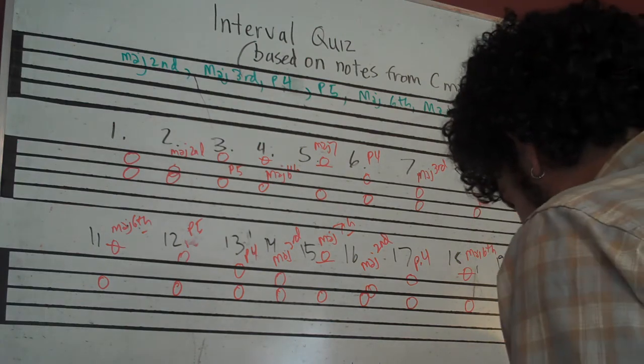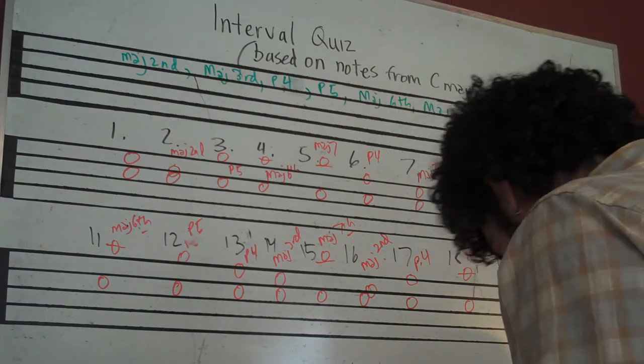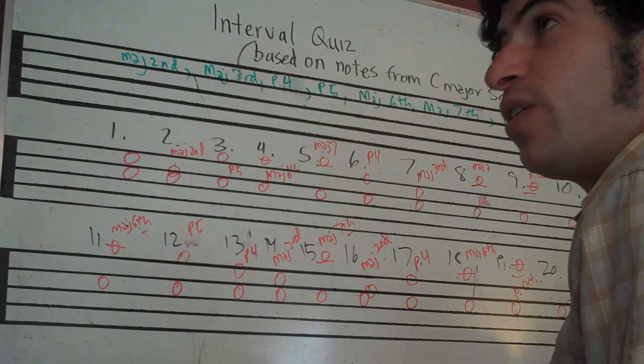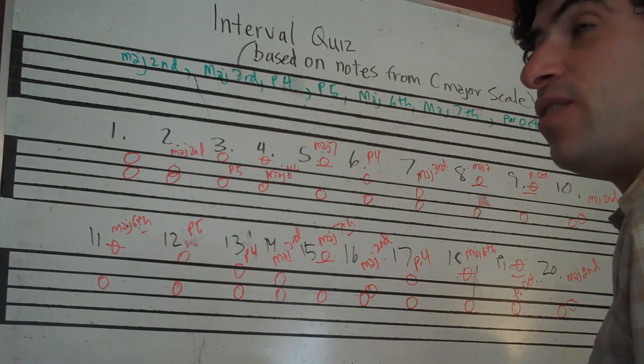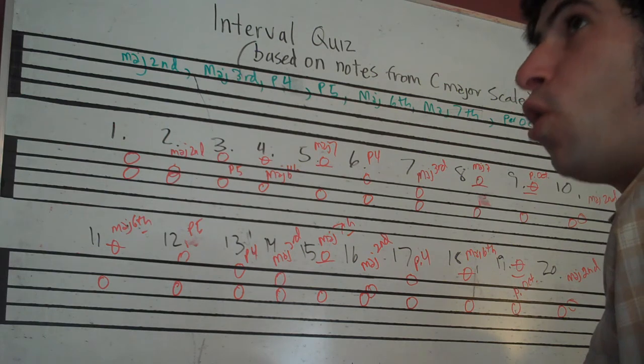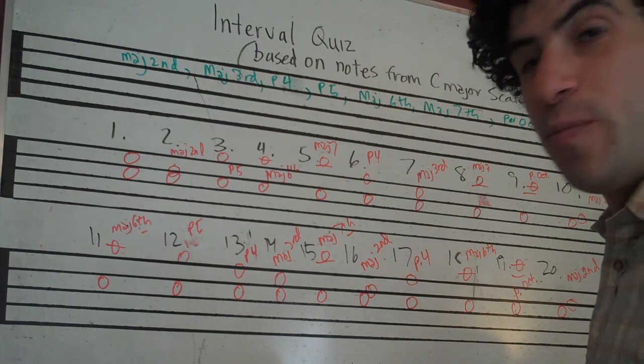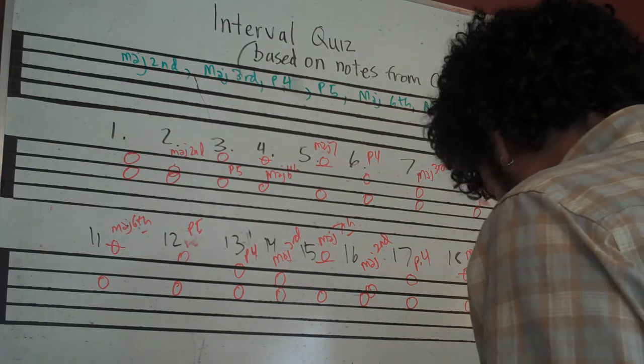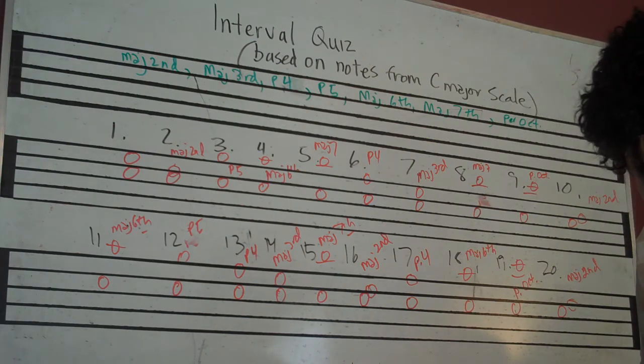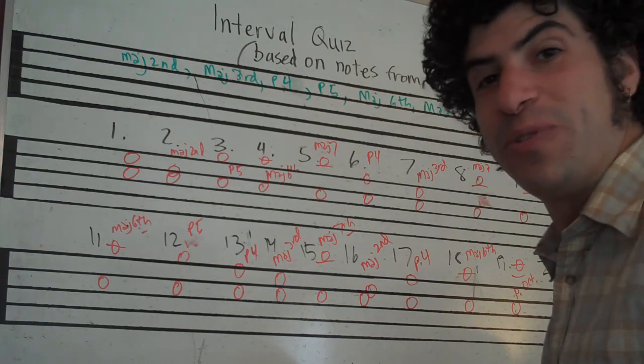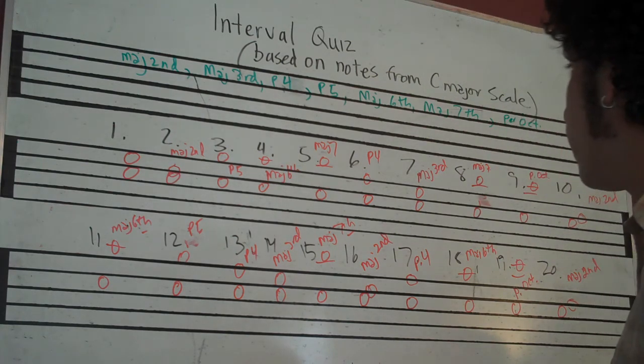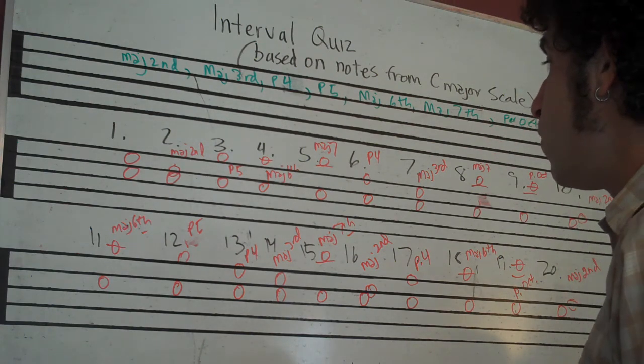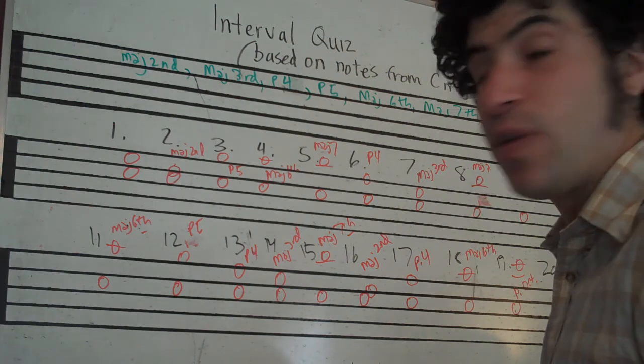Or, you know, like something as simple or as funny as like Do, Sol, Do. You know, like The Wizard of Oz. You know, O, E, O, Do. You know, you could remember perfect fifth that way. Or, I don't know. There's a bunch of them. You can make up your own, you know. But find the songs that you love. That you know the melodies really well to. And maybe that will help you identify some of those intervals.